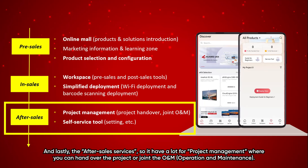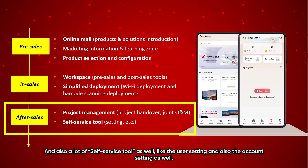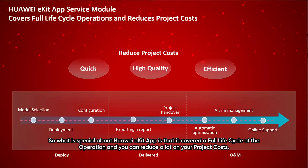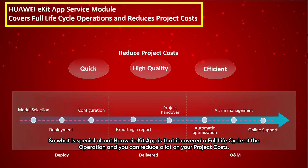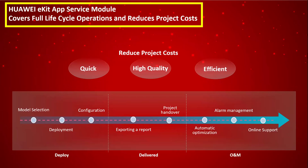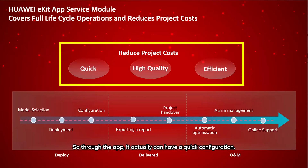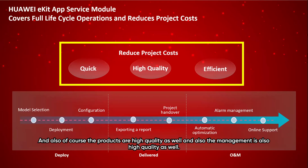For after-sales services, there is project management where you can hand over projects or join O&M, plus self-service features like user settings and account settings. What is special about eKit app is that it covers the full lifecycle of operation, allowing you to reduce project costs significantly through quick configuration and high-quality products and management.